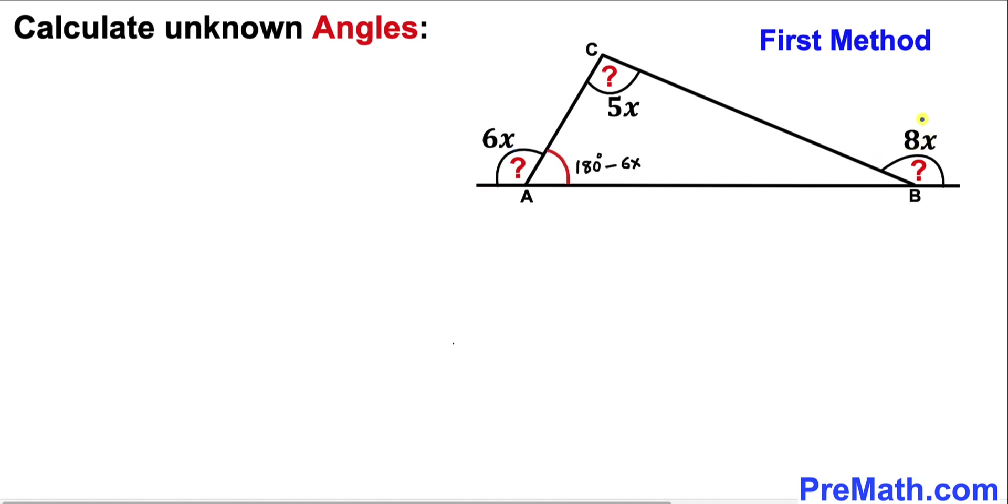And now let's focus on this angle. Once again this whole straight angle is 180 degrees. So therefore this angle has got to be 180 degrees minus 8x. And now let's recall triangle sum theorem.